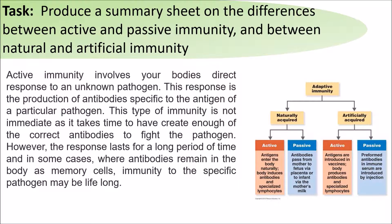Active immunity involves your body's direct response to an unknown pathogen. This response is the production of antibodies specific to the antigen of a particular pathogen. This type of immunity is not immediate, as it takes time to create enough antibodies in order to neutralize the pathogen. However, the response lasts for a long period of time, and in some cases where antibodies remain in the body as memory cells, immunity to the specific pathogen may be lifelong.